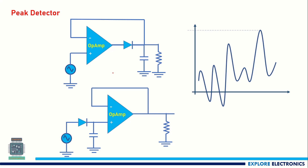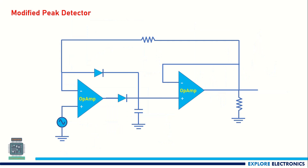Another approach is also a peak detector where we use the diode and capacitor combination at the non-inverting terminal of the op-amp at the input. This is the improved version, which we call the modified peak detector.